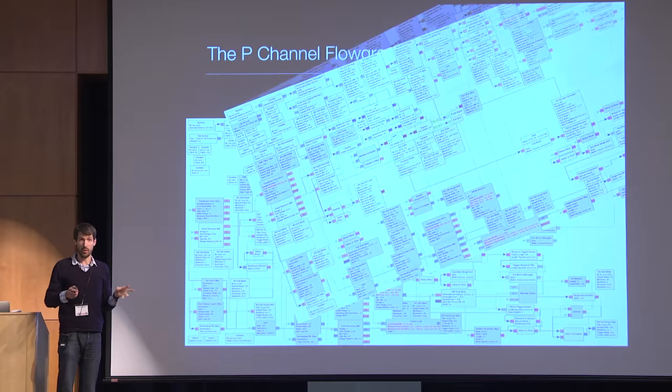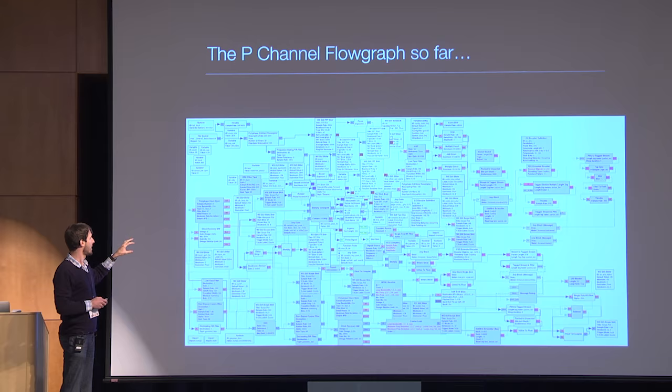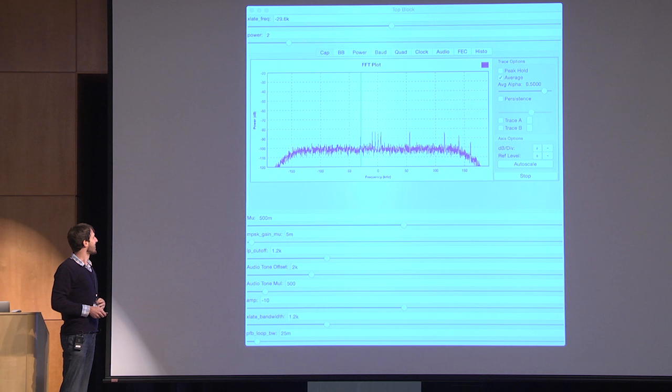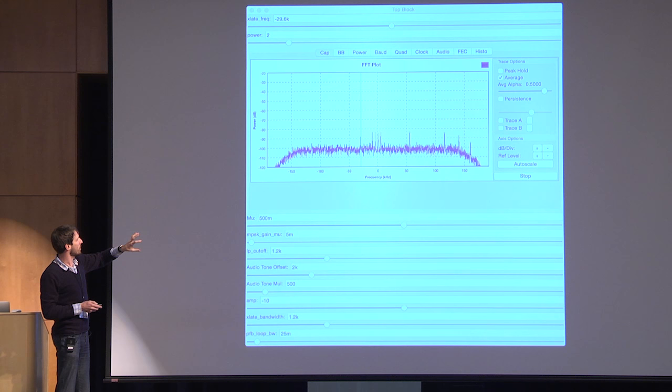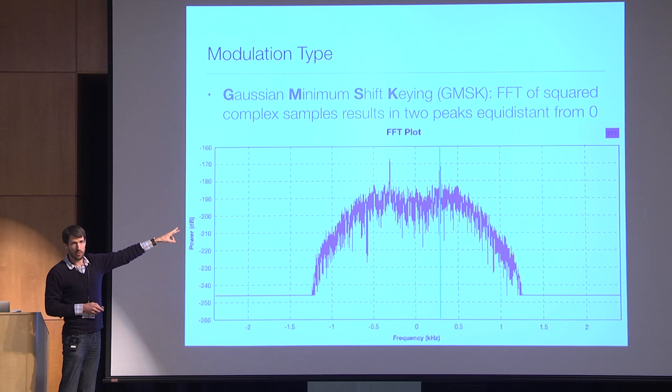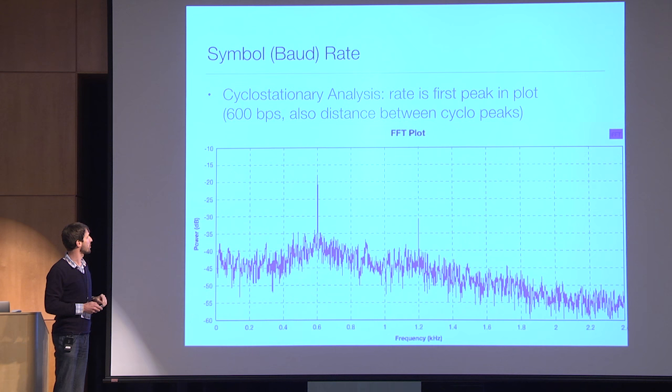I just looked at the P-channel since that's where some messages are. This is what the flow graph used to look like, and then it became a little bit nicer using hierarchical blocks. I did all this mostly blind, at least the physical layer. It turns out it's GMSK — you get the two distinct peaks once you square the signal and take the FFT, which is the distinctive signature. To figure out the baud rate, you do cyclostationary analysis by multiplying the signal by a lag of itself and taking the FFT, and you get a very clear peak at 600 baud.